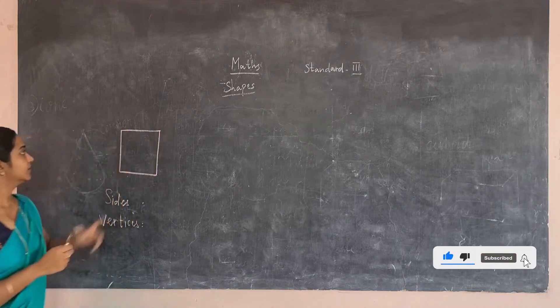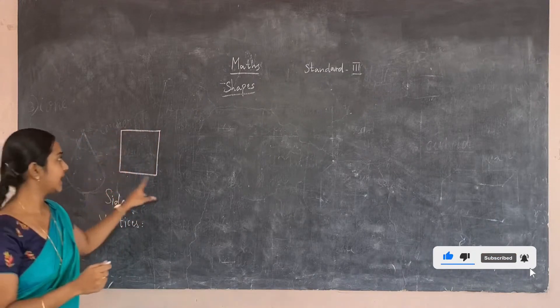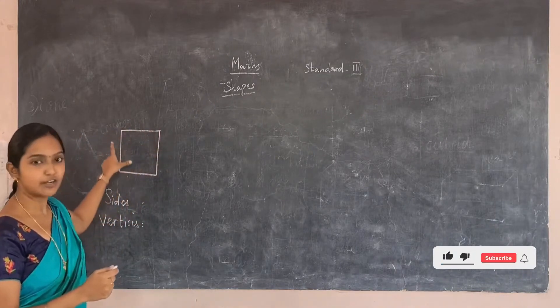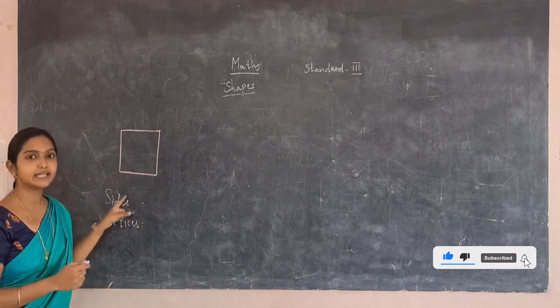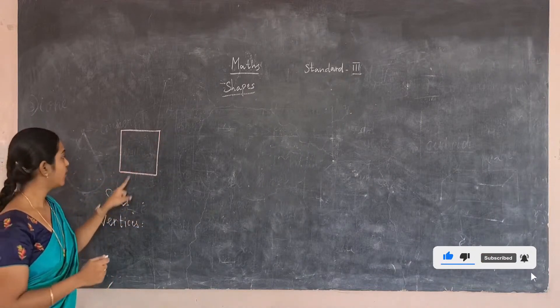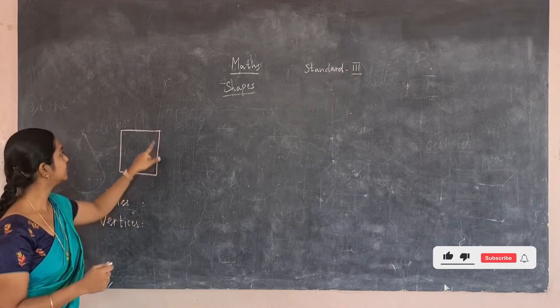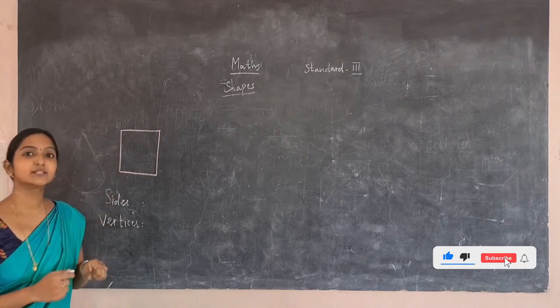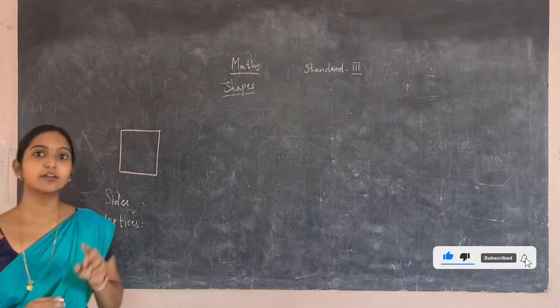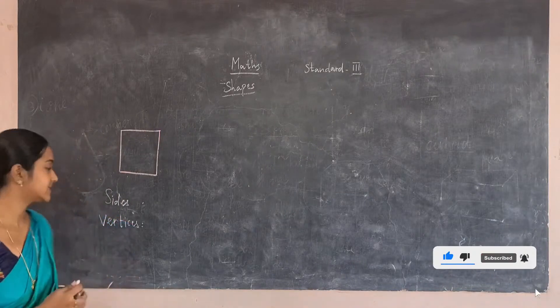Each line drawn is called a side. Now count how many lines are there: 1, 2, 3 and 4. So in a square there are 4 sides.